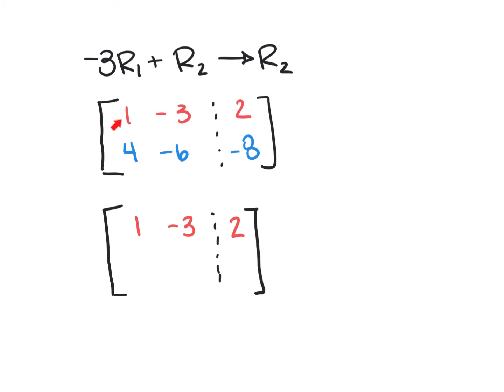So if I multiply 1 by negative 3, I'm going to get a value of negative 3. And then I'm going to add that value to what's sitting in row 2 right here to get the new row 2 down here. So negative 3 plus 4 is a positive 1.